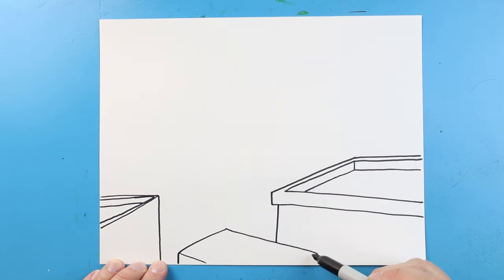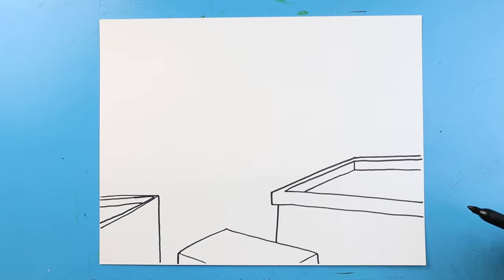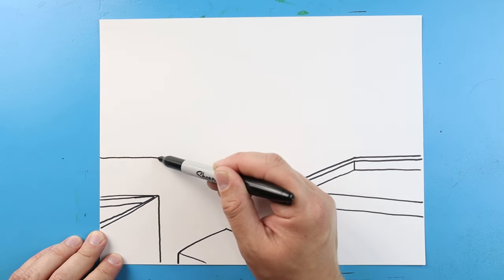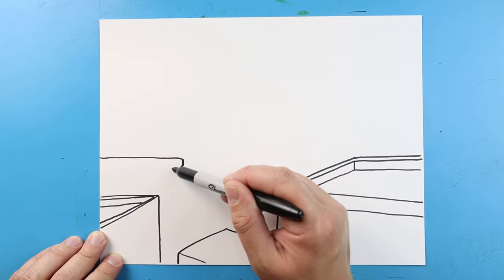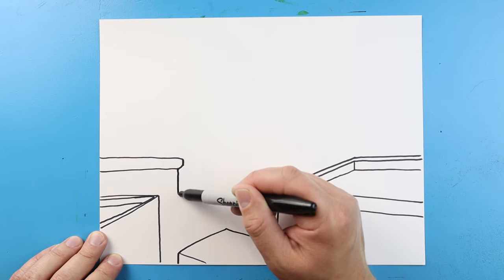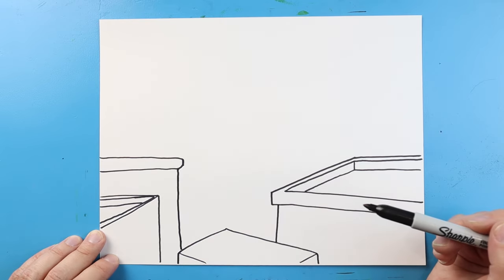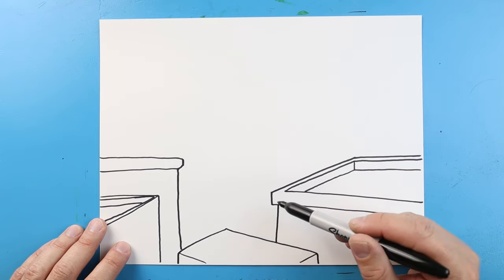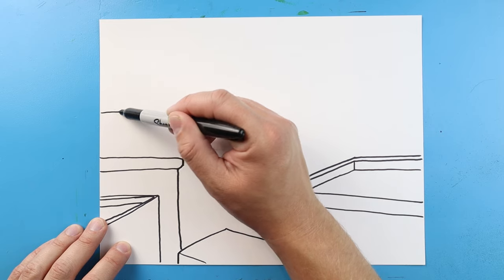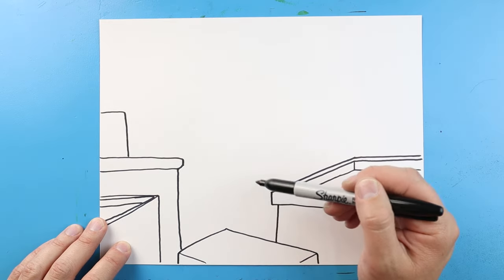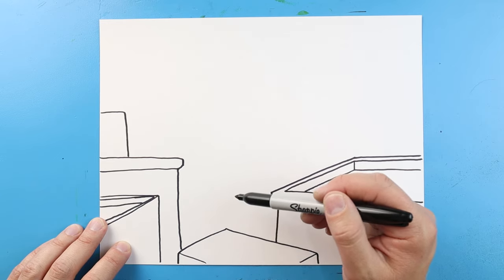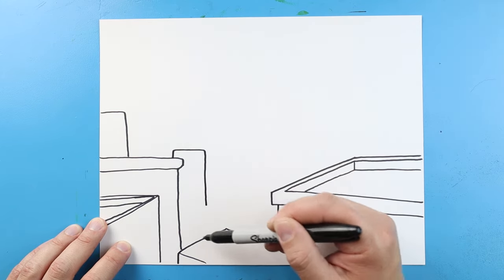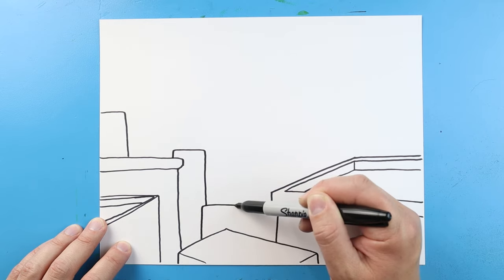Right here we're just going to draw a little line that comes across and a little line that comes down here. Starting out here, I'm going to draw a little line that's going to come out. We're going to go down, then bring this across, and bring this line down to here. Then over here, we're going to draw a little line that's going to come over and then down. And out here we'll make a little line that's going to come over and go down here.